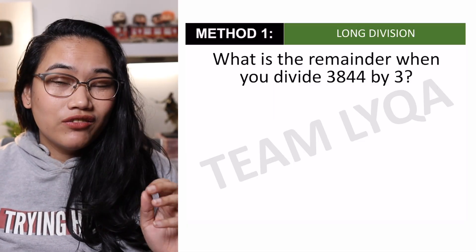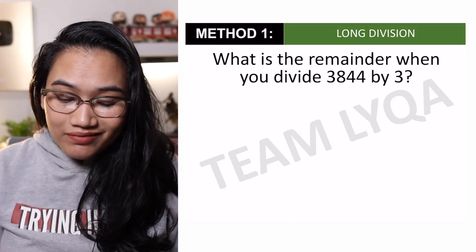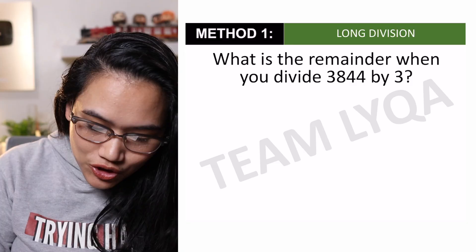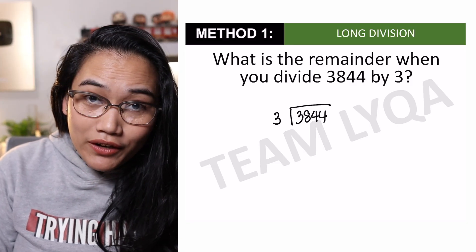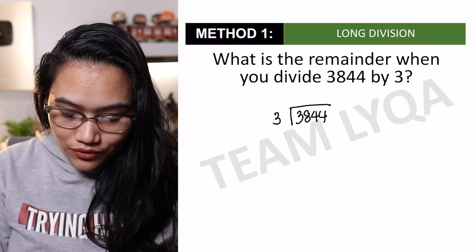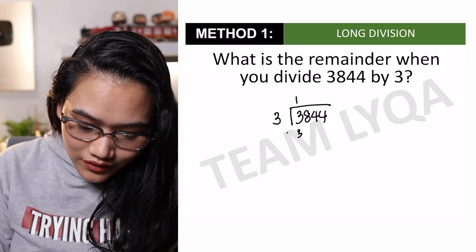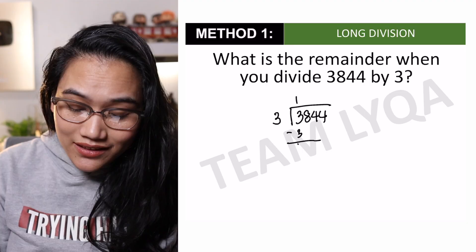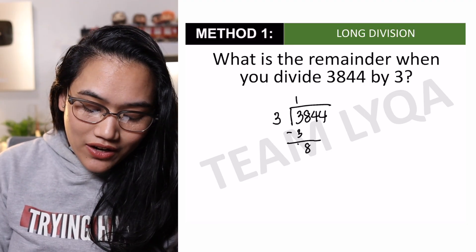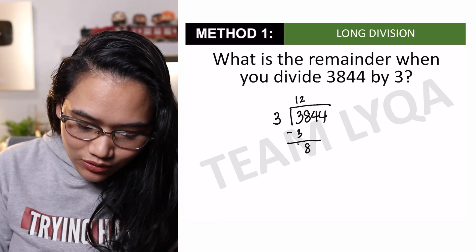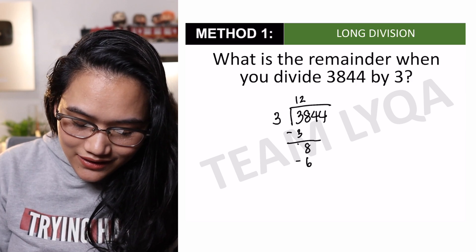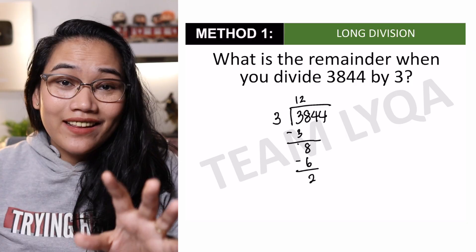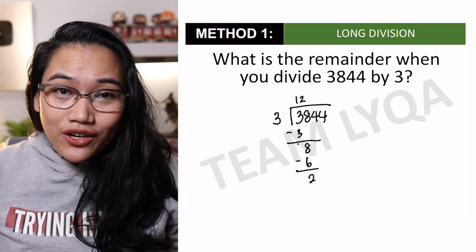What is the remainder when you divide 3,844 by 3? I-divide lang natin sya. Go from left to right. So, 3 divided by 3 is 1. Subtract natin sya — 0 yan. Bababa natin yung next digit, which is 8. 8 divided by 3 — ilang 3 ang kasya sa 8? That would be 2. 2 times 3 is 6. Subtract natin — 2. If you feel I'm going too fast, there's a full video lesson on long division.